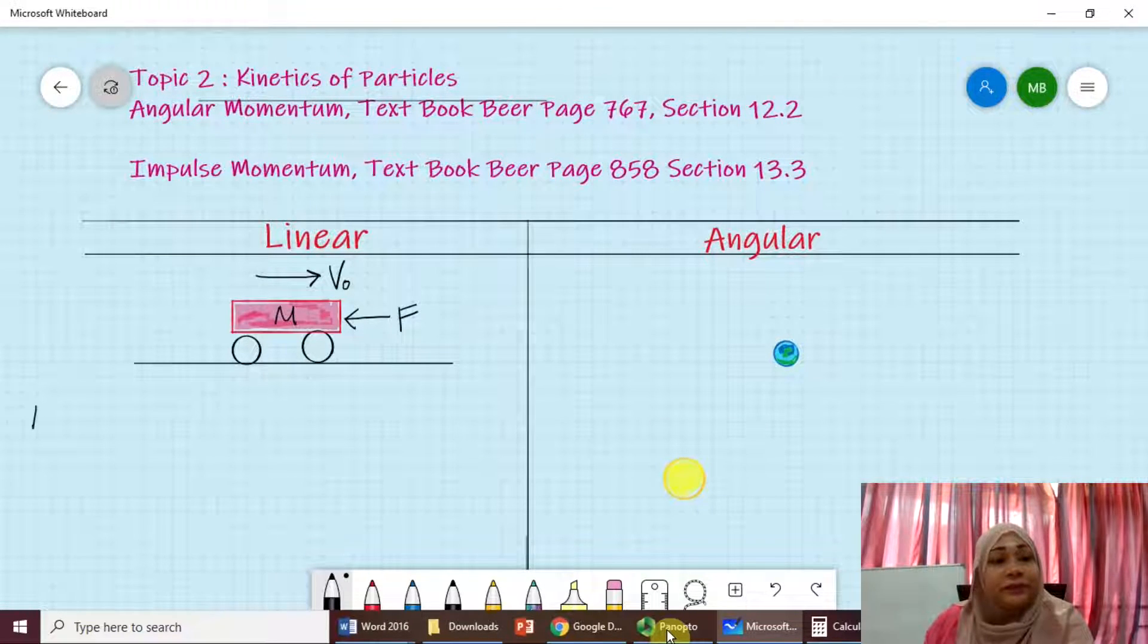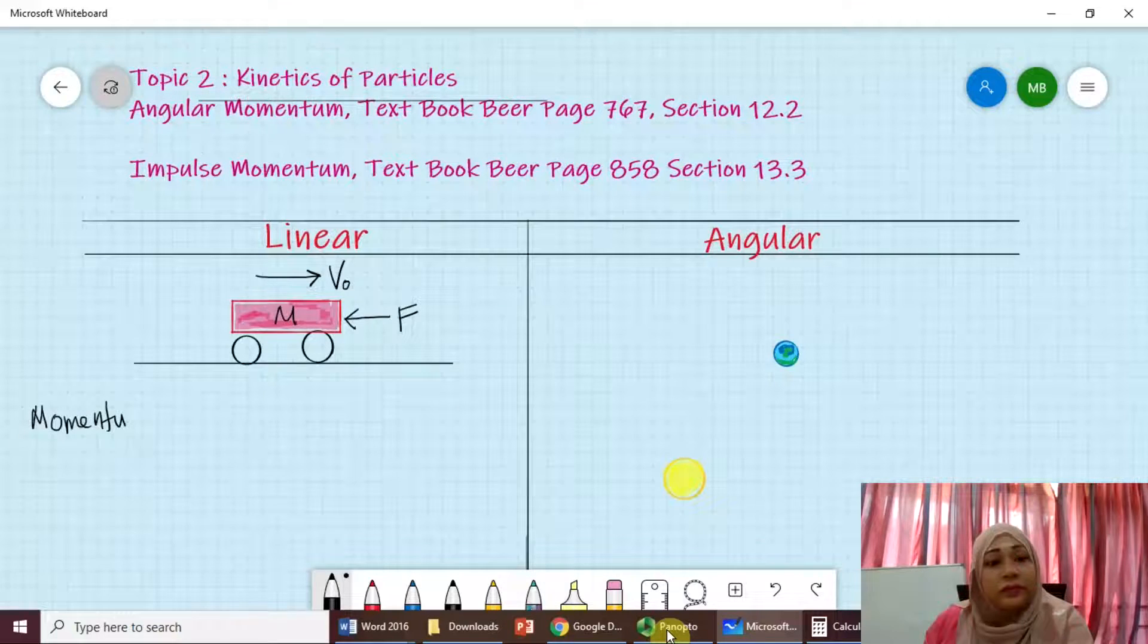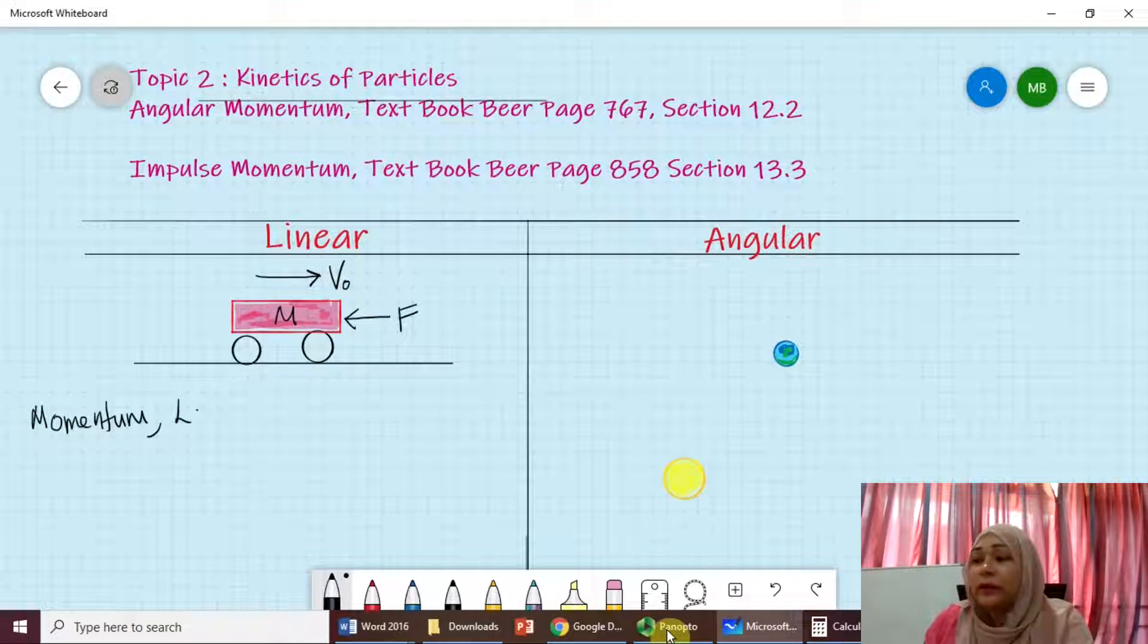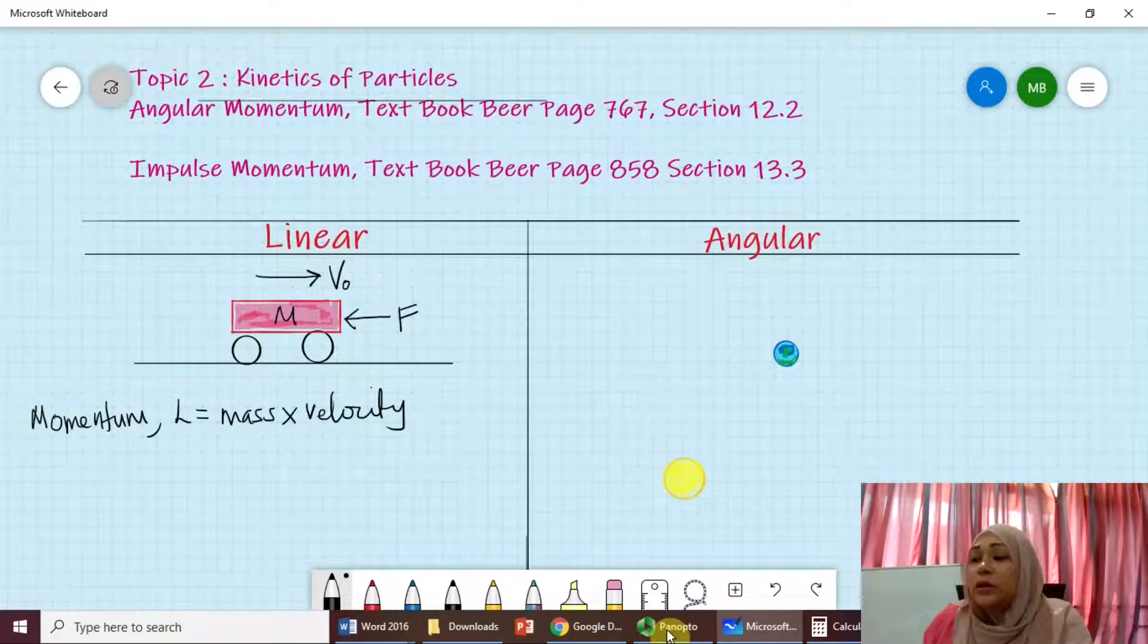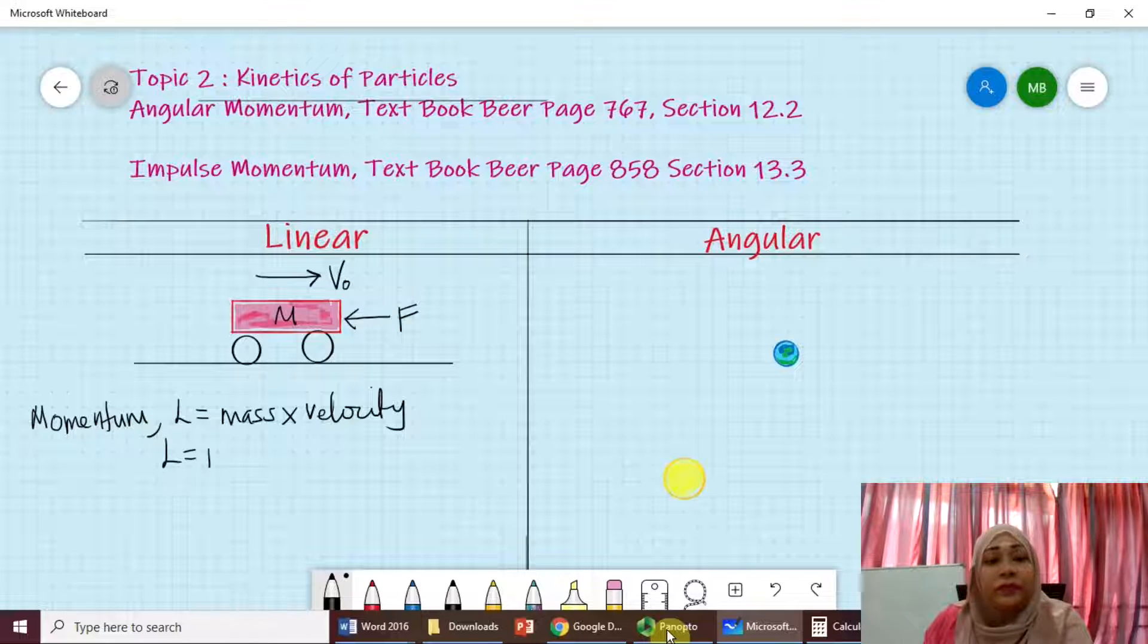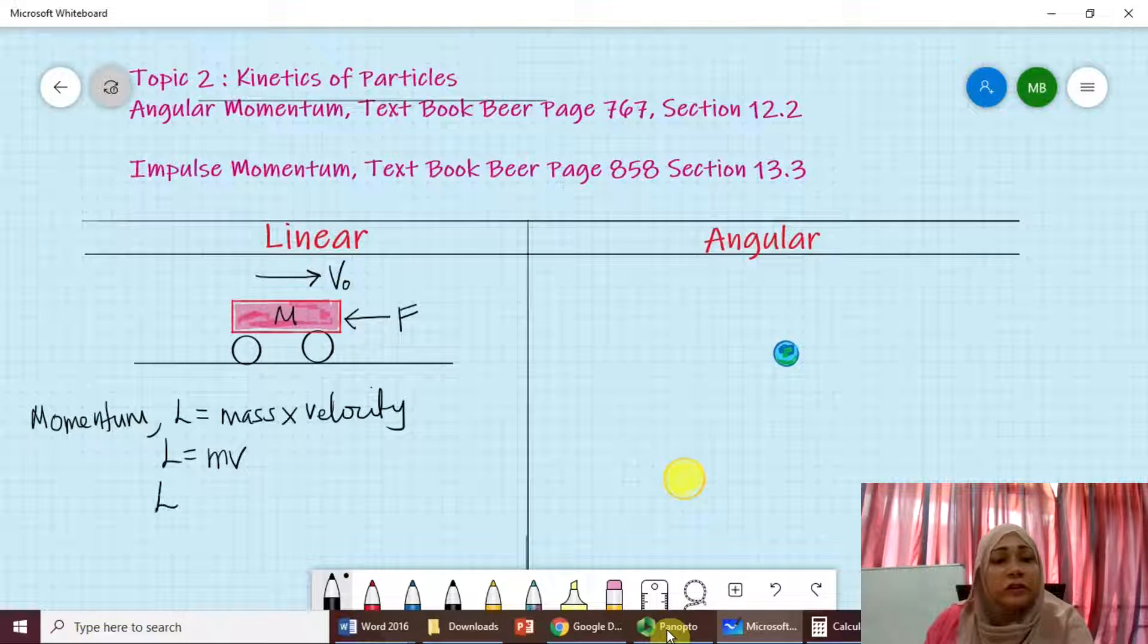Momentum L refers to the mass times the velocity. Now, so MV here represents the linear momentum of the particle. Now, let's change this momentum by some sort of force. Force equals to MA.